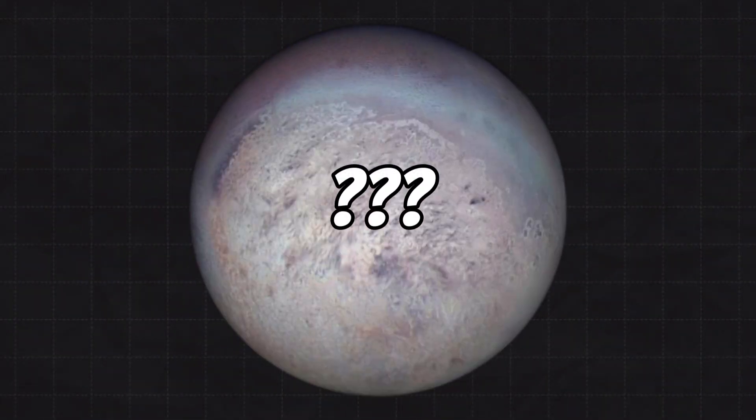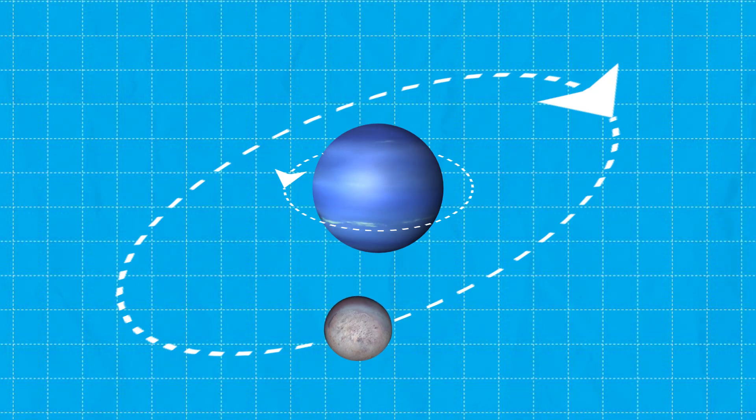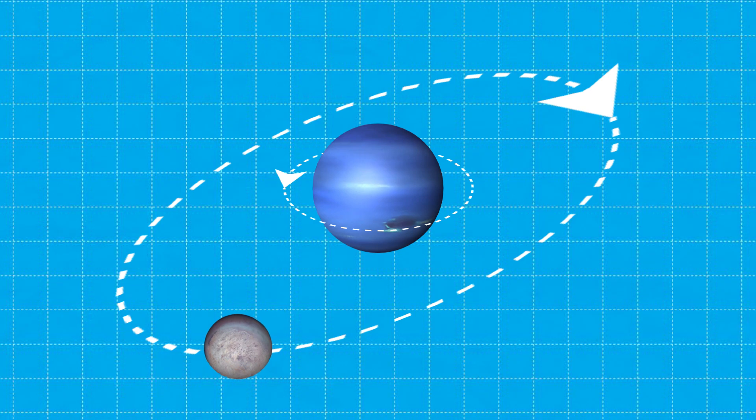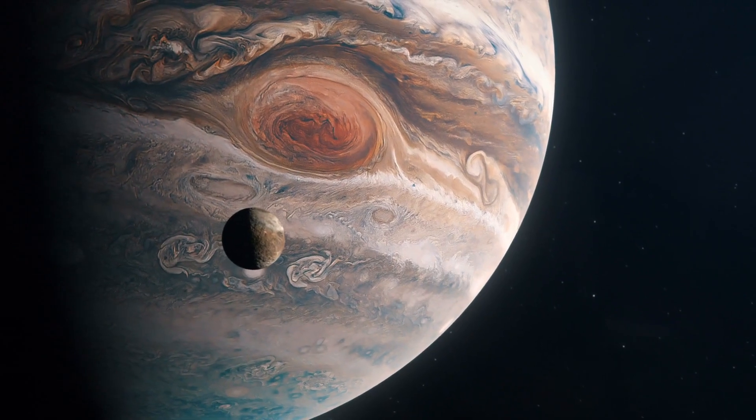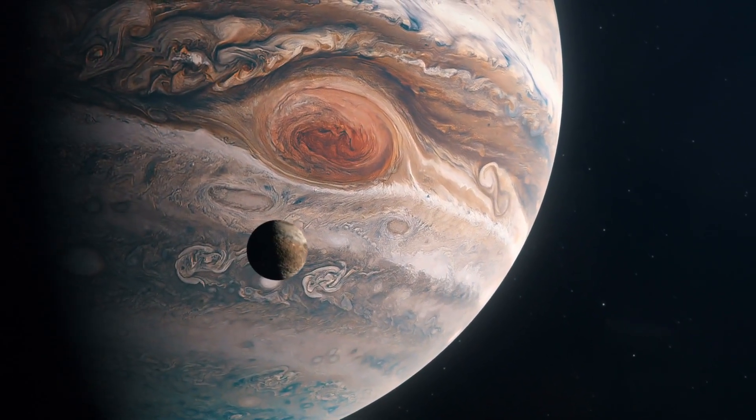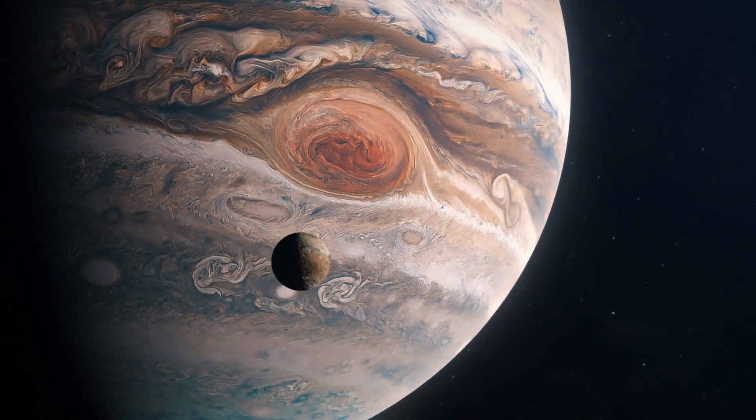So what makes Triton a rebel moon, or an oddball moon? Triton has a unique orbit opposite Neptune's rotation, making it the only large moon in the solar system with a retrograde orbit. This is unusual, because most moons in the solar system orbit their planets in the same direction as the planet's rotation.